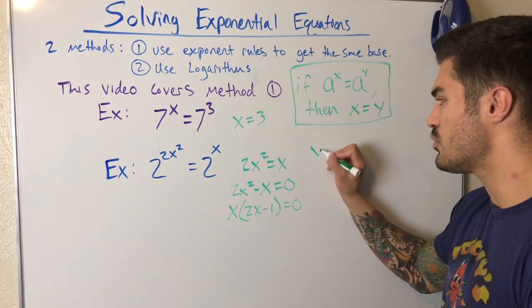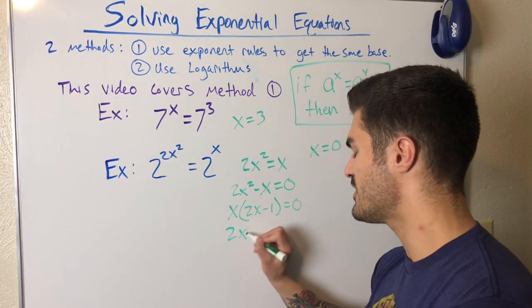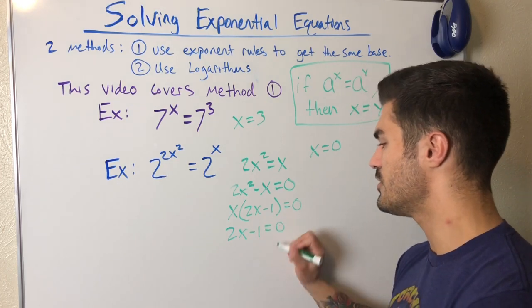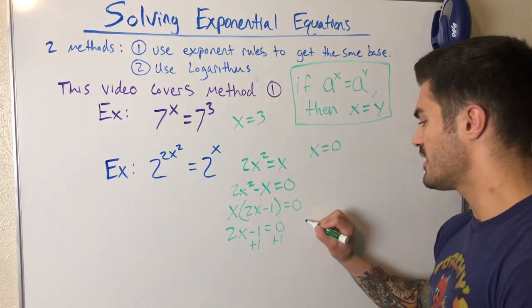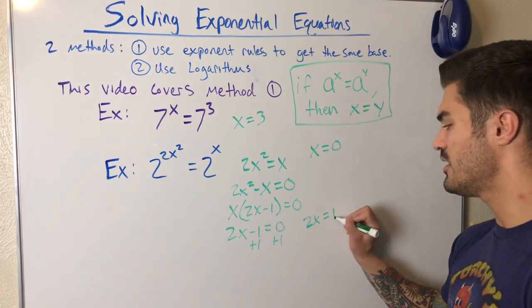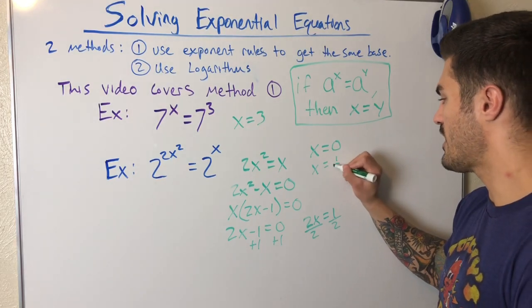I'm left with two x minus one times x equals zero. So that means x equals zero. That's one of my solutions for x. Another solution is two x minus one equals zero. I can add one to both sides, I get two x equals one. And now I can divide both sides by two and I get x equals one half.